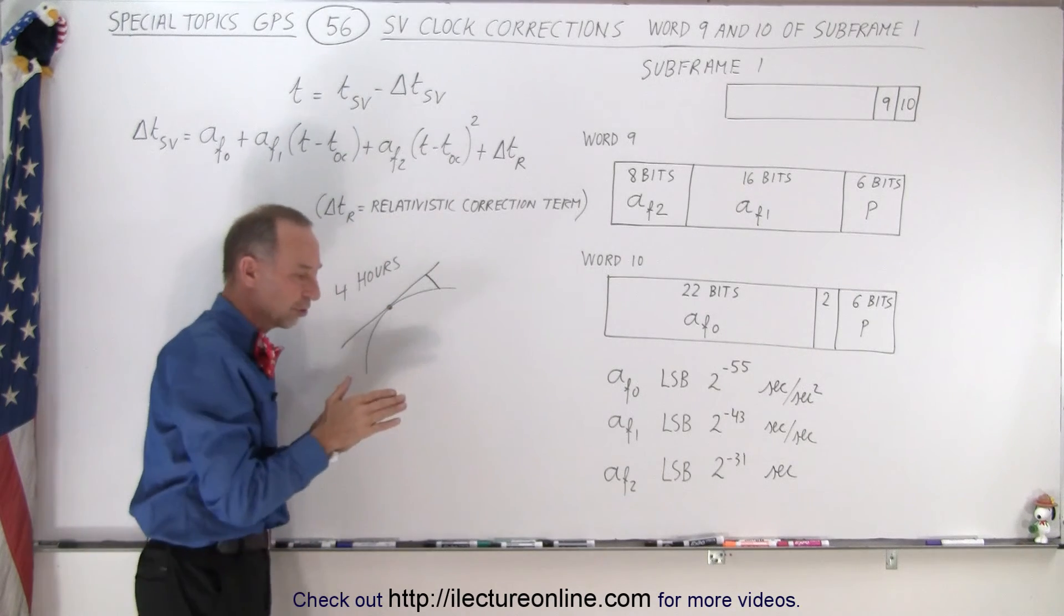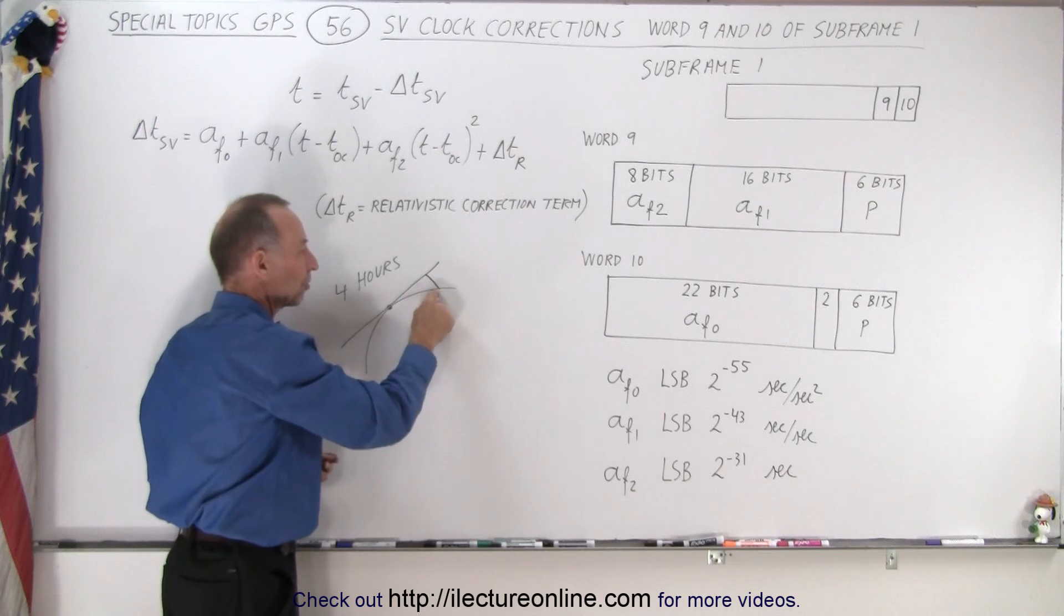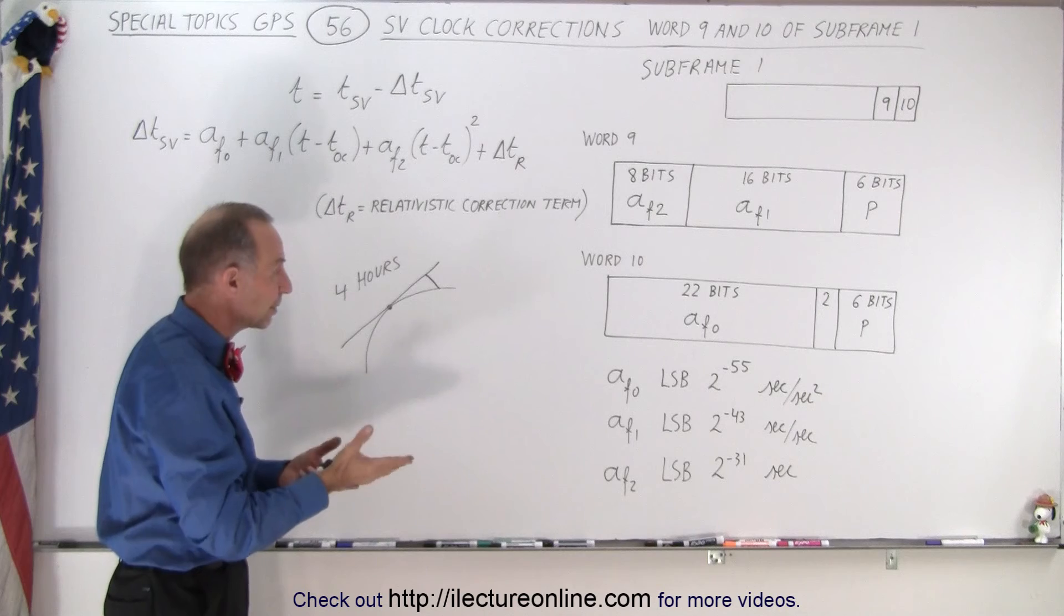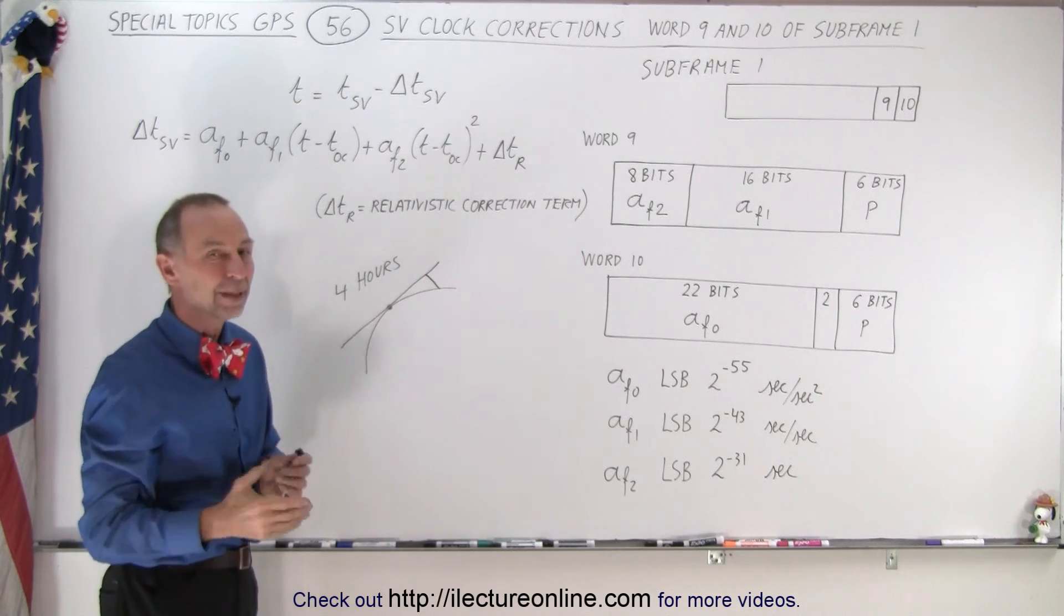And then we can then adjust the parameters for the ideal situation, we then have to adjust it for the parameters of the actual situation and that's how we keep the ephemeris data fairly accurate for a certain number of hours at a time.